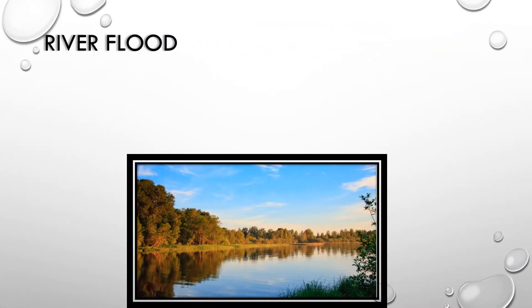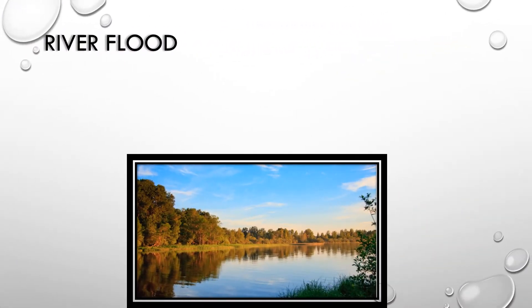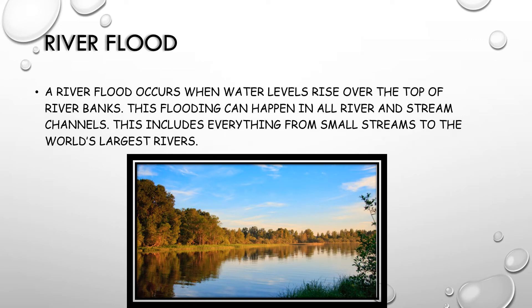River flood. A river flood occurs when water levels rise over the top of river banks. This flooding can happen in all river and stream channels. This includes everything from small streams to the world's largest rivers.